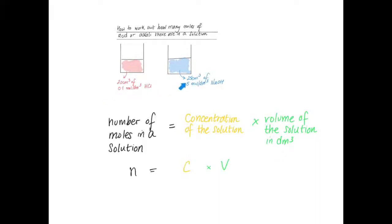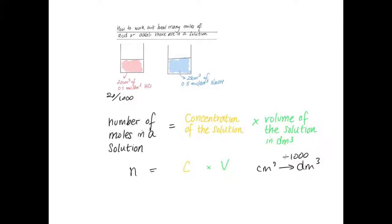The point to note is that the volume of the solution must be in decimeters cubed, and usually the question will give you the volumes in centimeters cubed. To go from centimeters cubed into decimeters cubed, you need to divide the volume by a thousand. So the volume in decimeters cubed of hydrochloric acid is 20 divided by a thousand, and for sodium hydroxide it is 25 divided by a thousand.